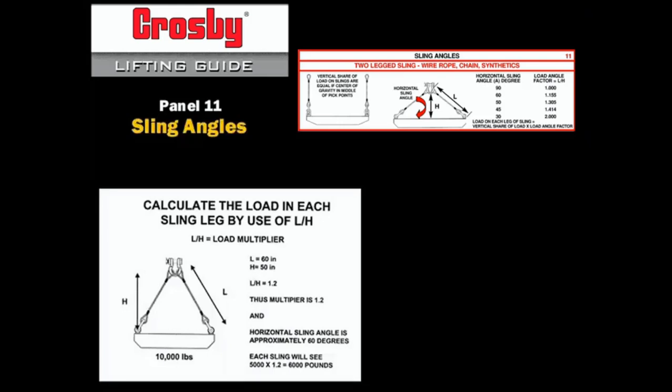Since the 10,000 pound load has the center of gravity centered on the slings, the vertical share of the load of each sling is 5,000 pounds. However, since the multiplier is 1.2 at a 60 degree horizontal angle, the actual load on each sling is 1.2 times 5,000, or 6,000 pounds.